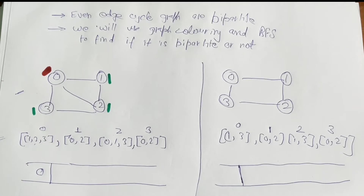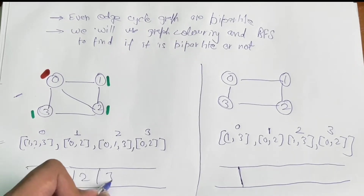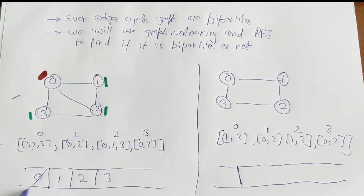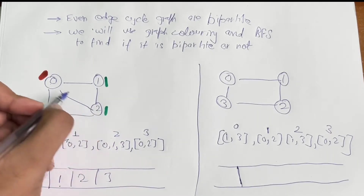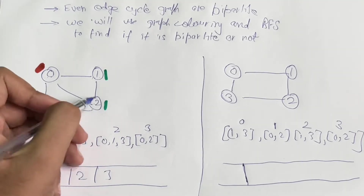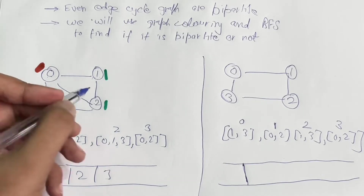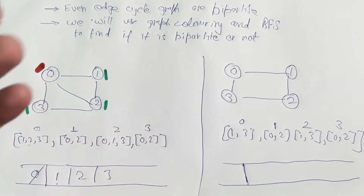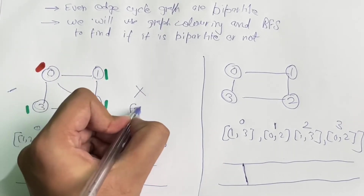We push neighbors 1, 2, and 3 into the queue. Node 0 is done, so we remove it and process node 1. The neighbors of 1 are 0 and 2. Node 0 is already colored opposite — that's okay. But node 2 is colored the same color as node 1, so this is not a bipartite graph and we return false.